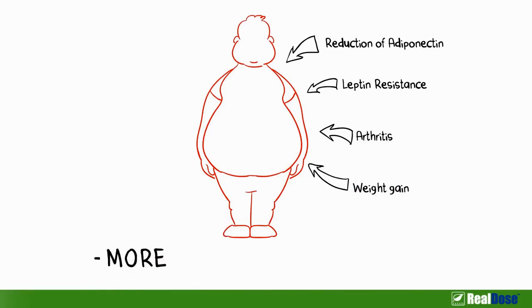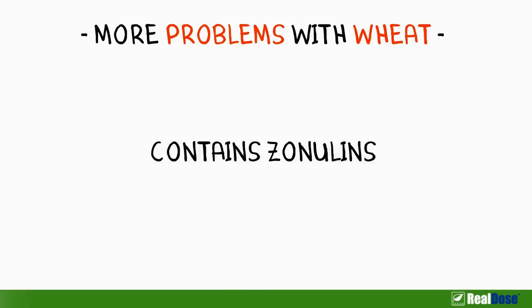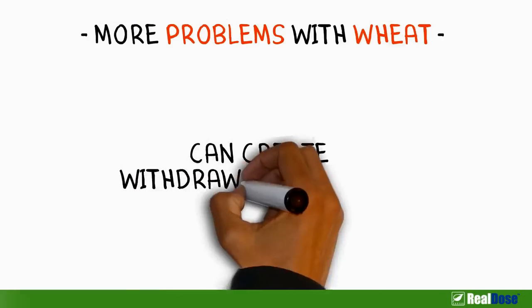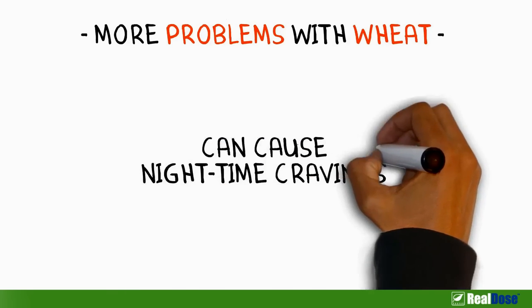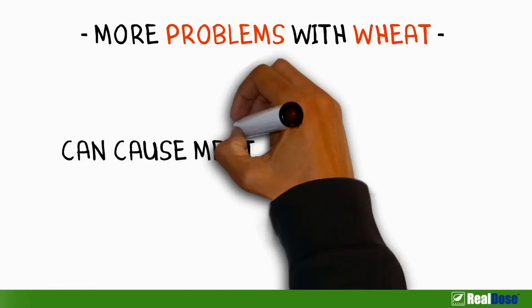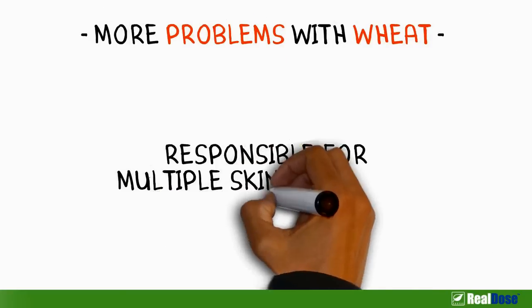There are a lot more problems associated with wheat. Wheat contains zonulins, which can create permeability or small holes in your intestines. Wheat can create withdrawal symptoms upon its removal. Wheat is a large culprit in nighttime cravings. Wheat can cause mental sluggishness and attention disorders. Wheat is responsible for multiple skin disorders.